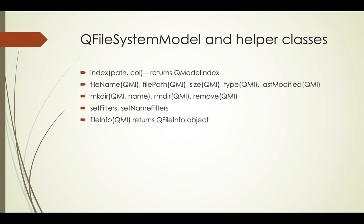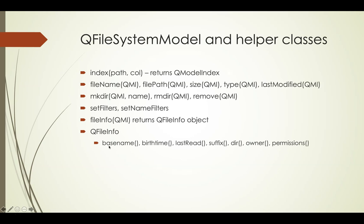There's a fileInfo method that takes the QModelIndex of a specific item and returns an instance of the QFileInfo class. The QFileInfo class is used to access detailed information about a file — for instance, you can get the file's base name, its birth time (when it was created), the time it was last accessed, its suffix (the extension), its parent directory, its owner, the permissions granted to users, and lots of other things. This goes further than the more commonly used properties like size and type available directly on the QFileSystemModel.